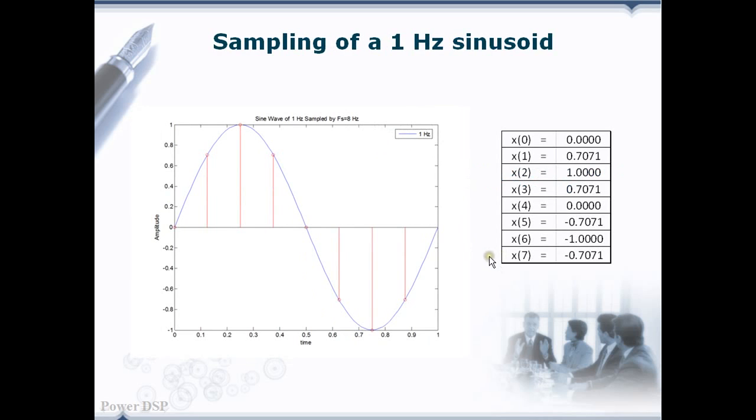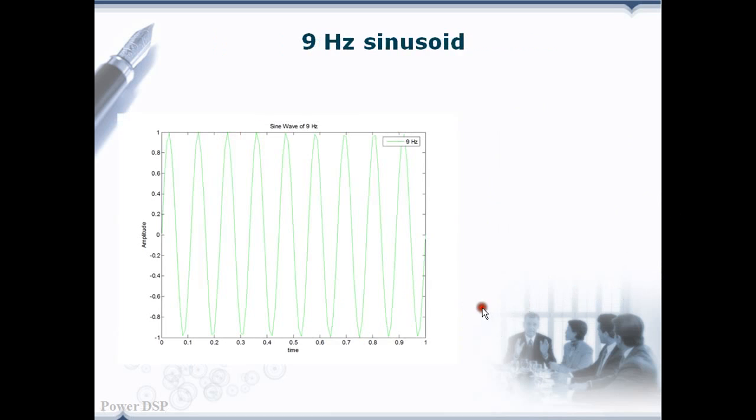Now, we are going to sample this 1 Hz signal with the sampling frequency of 8 Hz. That means we are going to take 8 samples from this signal at regular intervals of time. At 0 second, first sample is taken. At 0.1 second, second sample is taken. Similarly, at 0.2 second, third sample is taken and so forth. The adjacent table shows 8 samples that are taken after sampling.